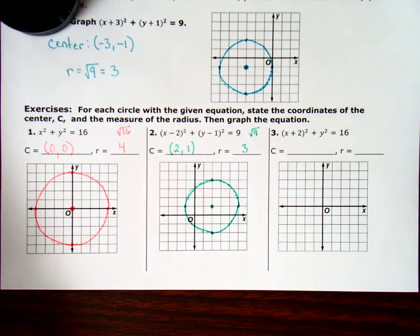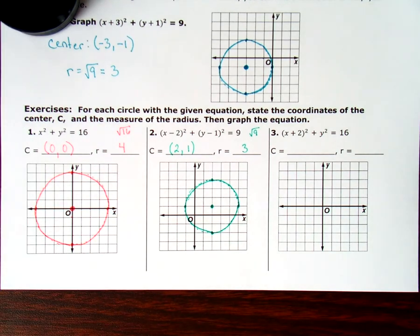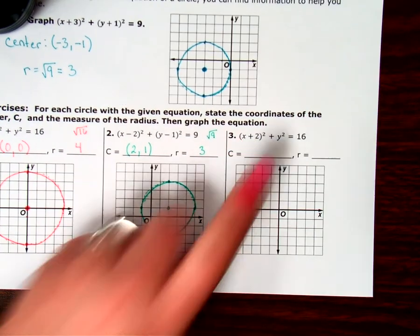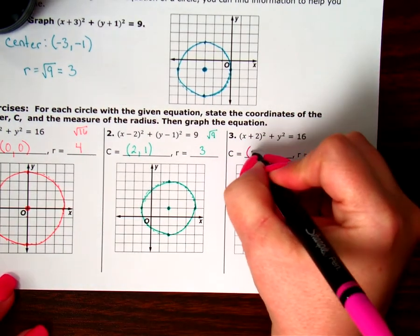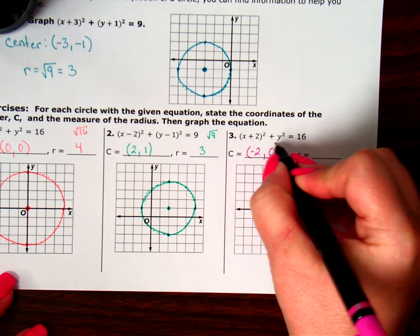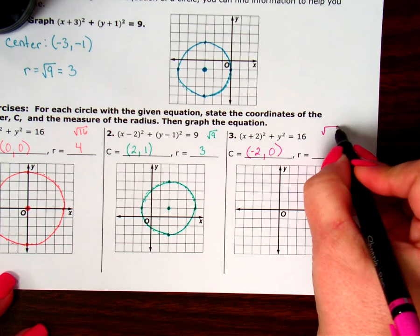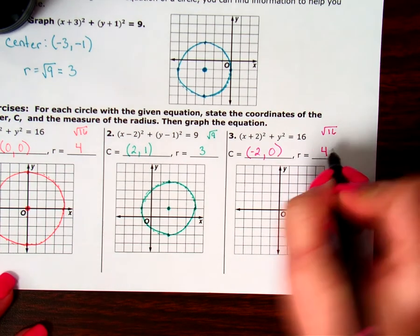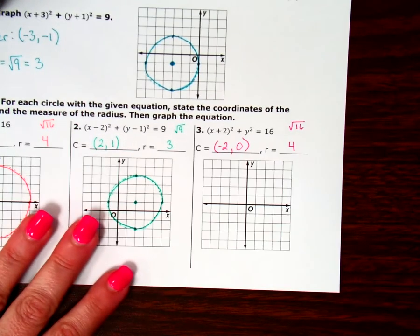One more. Let's do the last one. So, the last one. Remember, the sign in here is going to change to the opposite. So, that was really a negative 2. And since there's nothing there with the y, I know that was a 0. And then I'm going to square root that number on the end to figure out what the radius was. So my radius here again was 4.